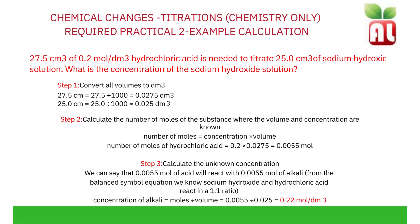Looking at the balanced symbol equation, hydrochloric acid and sodium hydroxide react in a 1:1 ratio, meaning the moles of hydrochloric acid will react with the same number of moles of sodium hydroxide. So 0.0055 mol of HCl reacts with 0.0055 mol of NaOH. To calculate concentration, you do moles divided by volume: 0.0055 ÷ 0.025 = 0.22 mol/dm³ of sodium hydroxide.